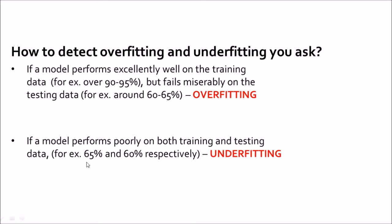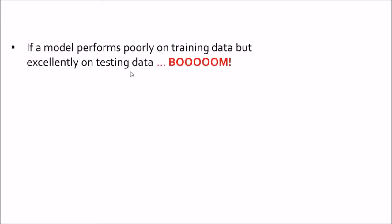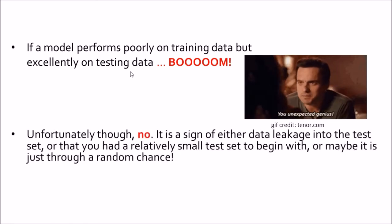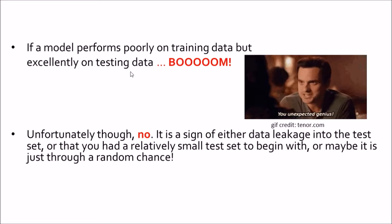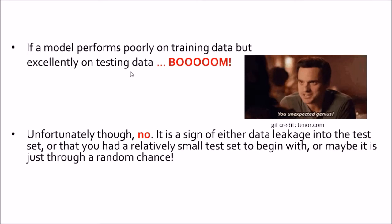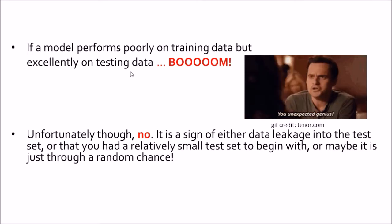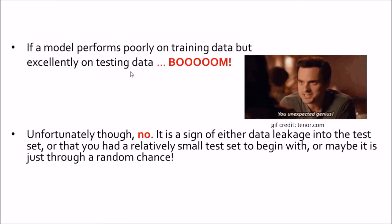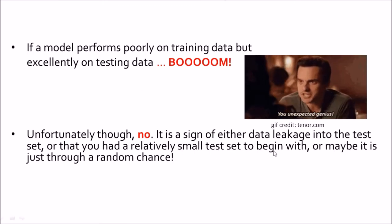Now just imagine if a model performs poorly on the training data but excellently well on the testing data — have you hit the jackpot? Unfortunately, no. It is a sign of either data leakage into the test set, meaning you have inadvertently peeped into the test set while training, or that you had a relatively small testing set to begin with.